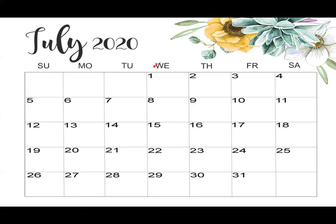Let's say today's date is 14th July. To find out which day today is, I will look at the calendar and find the 14th. Then I will look directly above it to see which day is written there. That is the day today — so today is Tuesday.